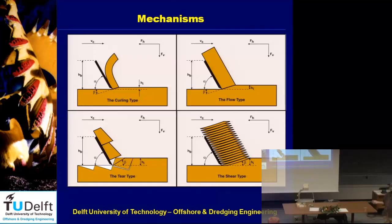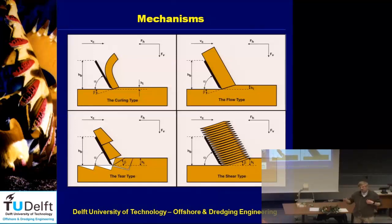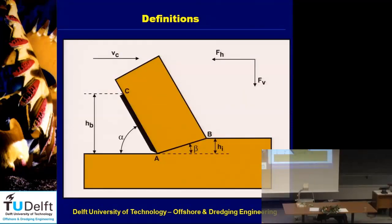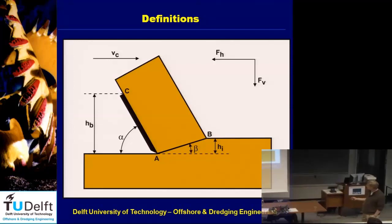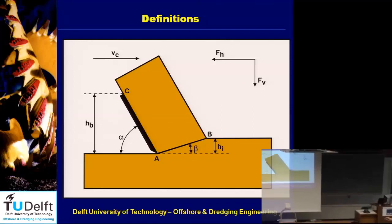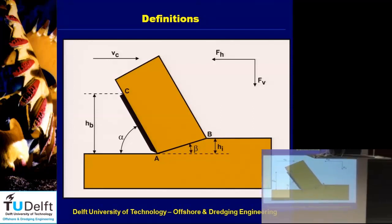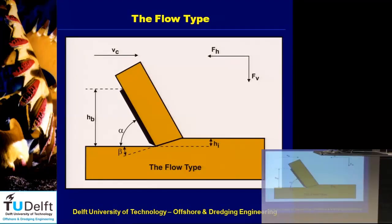To calculate the forces in clay, we start with the flow type, then based on that we'll see how to modify the equations for the curling type and the tear type. The definitions are the same as in sand: the blade with the tip at point A, the shear plane reaching the surface at point B, and the top of the blade at point C. We always start with the flow type and then see if the equations are okay.